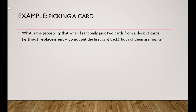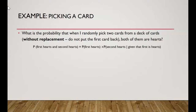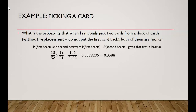What is the probability of randomly picking two cards from a deck without replacement and both being hearts? P(first hearts and second hearts) = P(first is hearts) × P(second is hearts | first was hearts) = 13/52 × 12/51. Multiplying numerators and denominators and dividing gives 0.0588235..., a repeating decimal. Rounded to three significant digits, the answer is 0.0588.